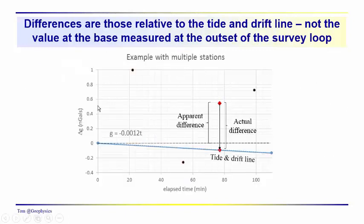If we look at multiple data points, it's common to think it was zero milligals at the base when we left in the morning, and now it's about 0.55 milligals on this scale. But it's actually more than 0.55 milligals because drift has occurred through time. We have to incorporate the drift — in this case the difference is going to be less by the amount of the drift. So that in a nutshell is the tide and drift correction.